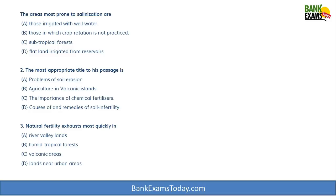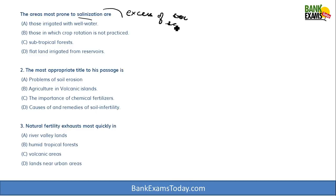The first question is: the areas most prone to salinization are — salinization means excess of salt in the soil. The options are: those irrigated with well water, those in which crop rotation is not practiced, subtropical forests, and flatland irrigated from reservoirs.